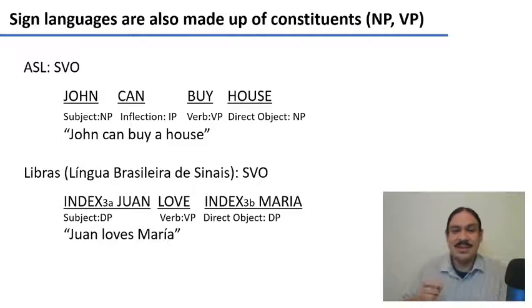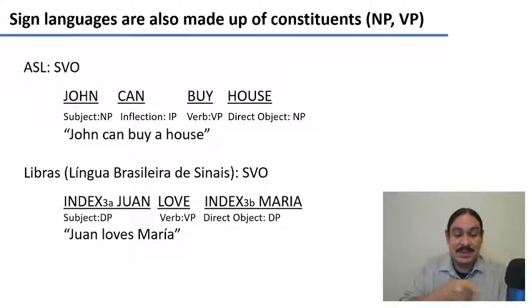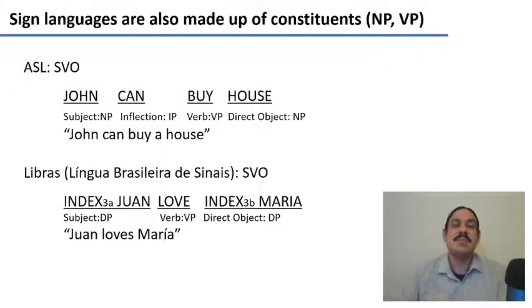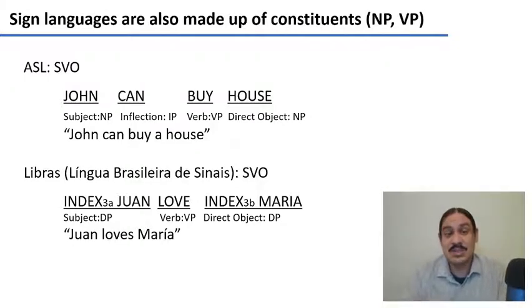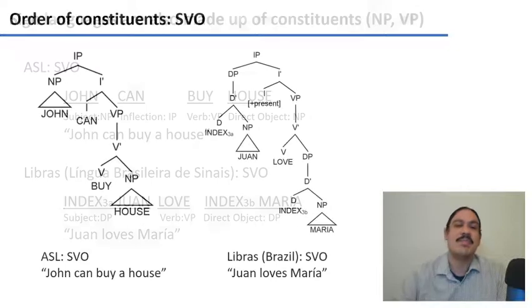So: Juan, love, Maria — and then index 3b would be some other position in space. As you can see, both of these languages have the order subject, verb, object.